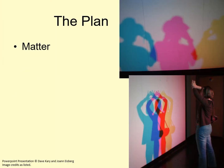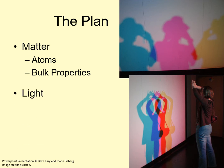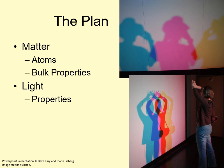We'll start by looking at the properties of matter. We'll look at atoms and their properties, and finally we'll discuss some of the bulk properties of matter that we can measure. Then we'll look at light — starting with the properties of light itself, then how light and matter can interact with each other. This last part is where we'll see how we can use light to measure the properties of matter, as well as how light can affect matter. Both of these will be important later in the course.